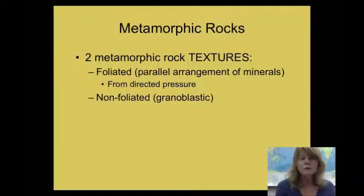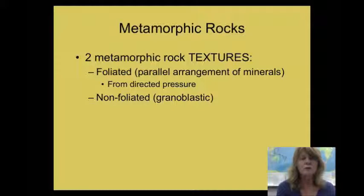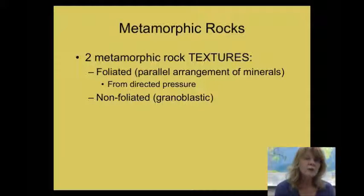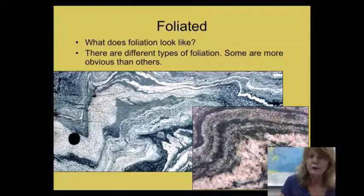Some metamorphic rocks form in the absence of directed pressure, or the minerals are all roughly equant in shape, so you don't notice any foliation. So how do we identify a non-foliated metamorphic rock? We have to do some property tests, observe the rocks, and look for clues to see what types of rocks they are and give the rocks a name.